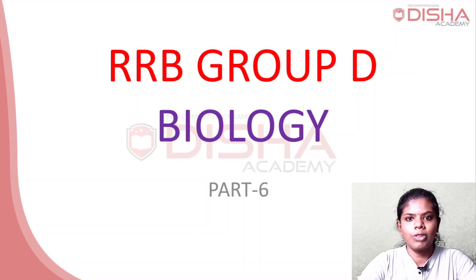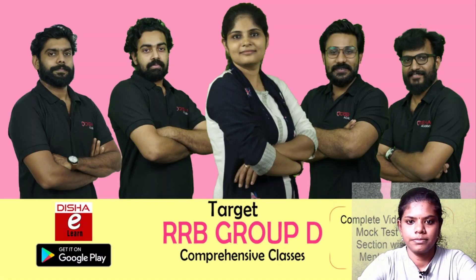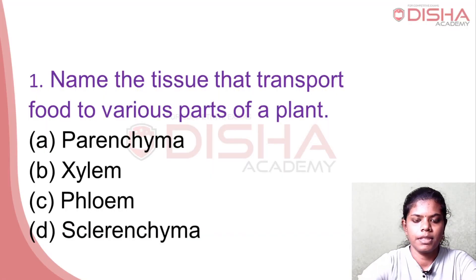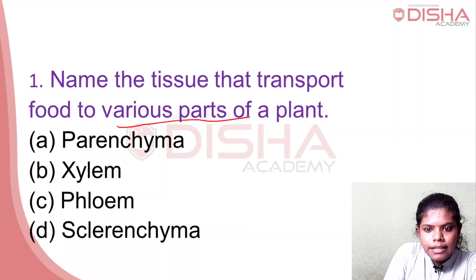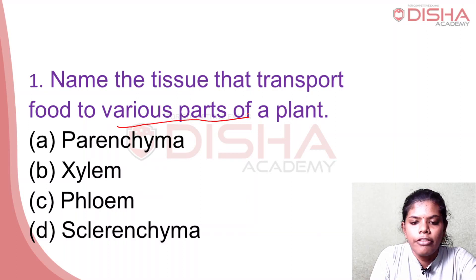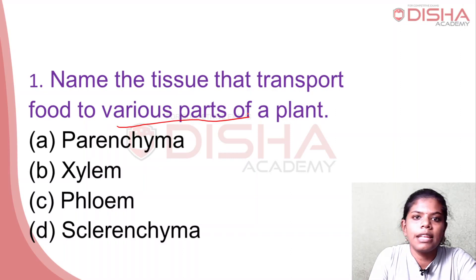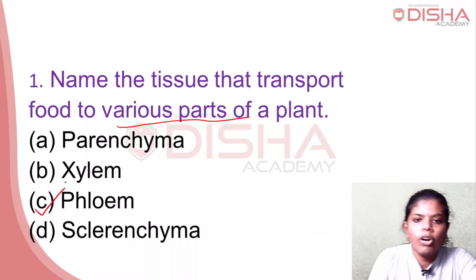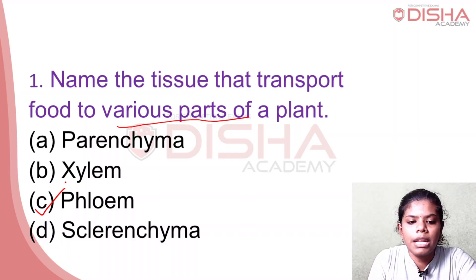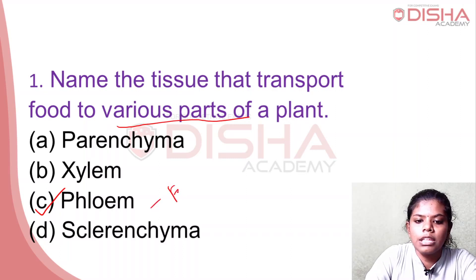In the biology class, we are going to ask questions. Name the tissue that transports food to various parts of the plant. Plants prepare food via photosynthesis in leaves. The tissue that transports food to various parts of the plant is phloem. The phloem tissue is transported to the leaves.